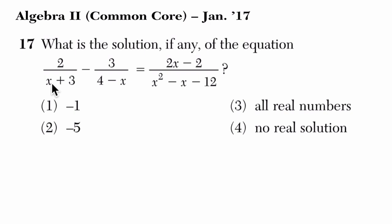So what do we do here? How do we figure out what the solutions could be, and then how do we figure out if they're extraneous? The first thing we're going to do is multiply everything by a least common multiple.